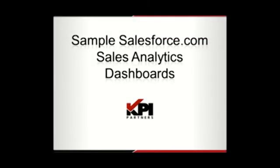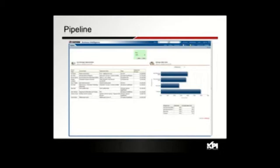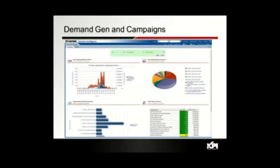Here are some sample dashboards before we go to the live demo. Here's a pipeline dashboard showing strategic opportunities and average sales cycle length by product line from Salesforce. On the demand generation side, there's a dashboard showing new opportunities by month, new opportunities by source — where source refers to campaign — and opportunity revenue by source, plus close rate from an opportunity perspective.